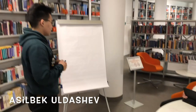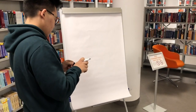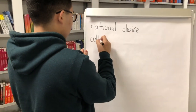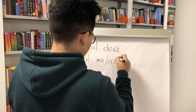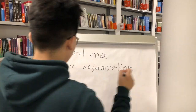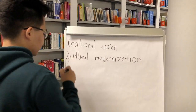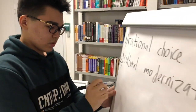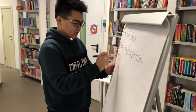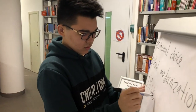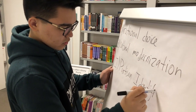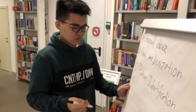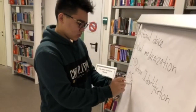The book that you read had two theories. The first was rational choice, and the second was structural modernization. I'm going to write about these theories in two aspects. The first aspect is partisan identification.